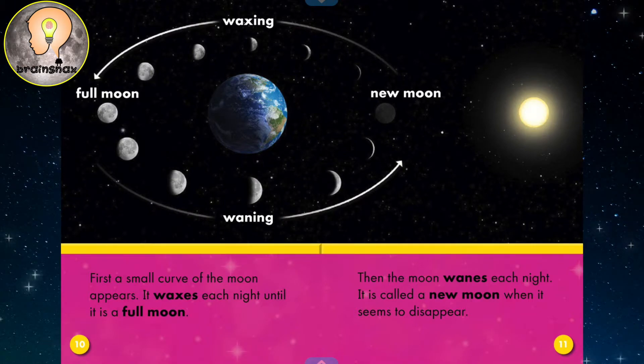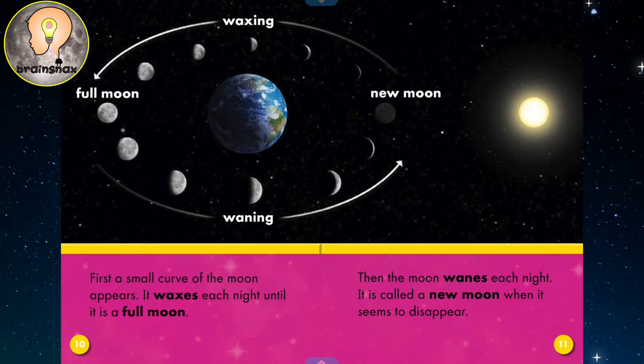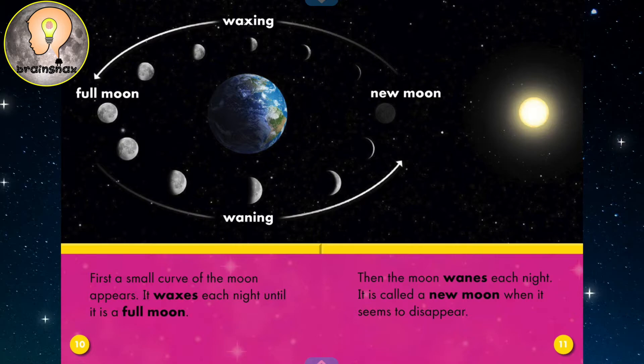Then the moon wanes each night. It is called a new moon when it seems to disappear. So when the moon wanes, that's called a waning moon. And that means the moon is getting smaller and smaller until it becomes a new moon, which looks like it disappears.